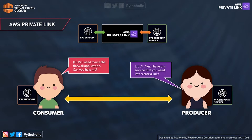Imagine John from the engineering team wants to use a firewall application provided by the security team where Lily works. They can create a Private Link connection using an endpoint on John's side and a service endpoint on Lily's side to securely access the service without using a public internet connection. John asks for the firewall application, Lily says 'I have this service, let's create a link.' In real time, teams communicate and create service endpoints for each other to access services.